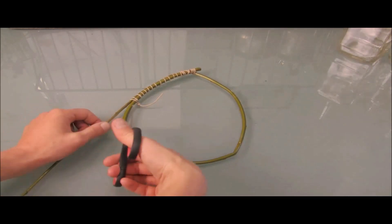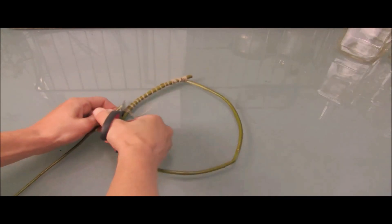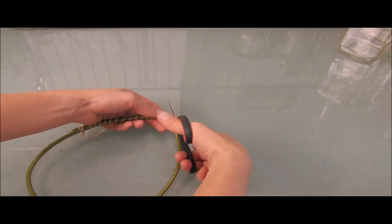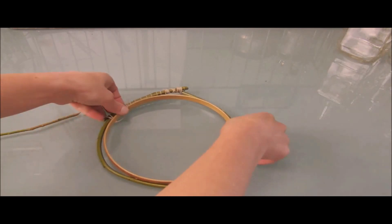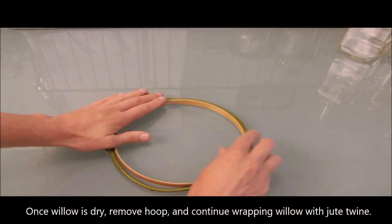Now that we have our basic shape, I'm going to go ahead and cut the willow right here at an angle. Cut this one at an angle as well. I'm going to go ahead and reinsert the embroidery hoop so that it can dry around the embroidery hoop.